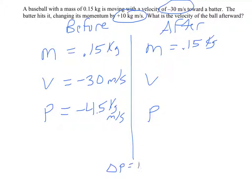So delta P equals positive 10 kilogram meters per second. So its new momentum, negative 4.5 plus 10, it now has positive 5.5 kilogram meters per second.